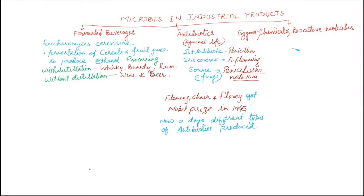In this slide we can see the use of microbes in the formation of industrial products. Microbes are utilized in fermentation of beverages, formation of antibiotics, synthesis of enzymes, chemicals, and bioactive molecules.